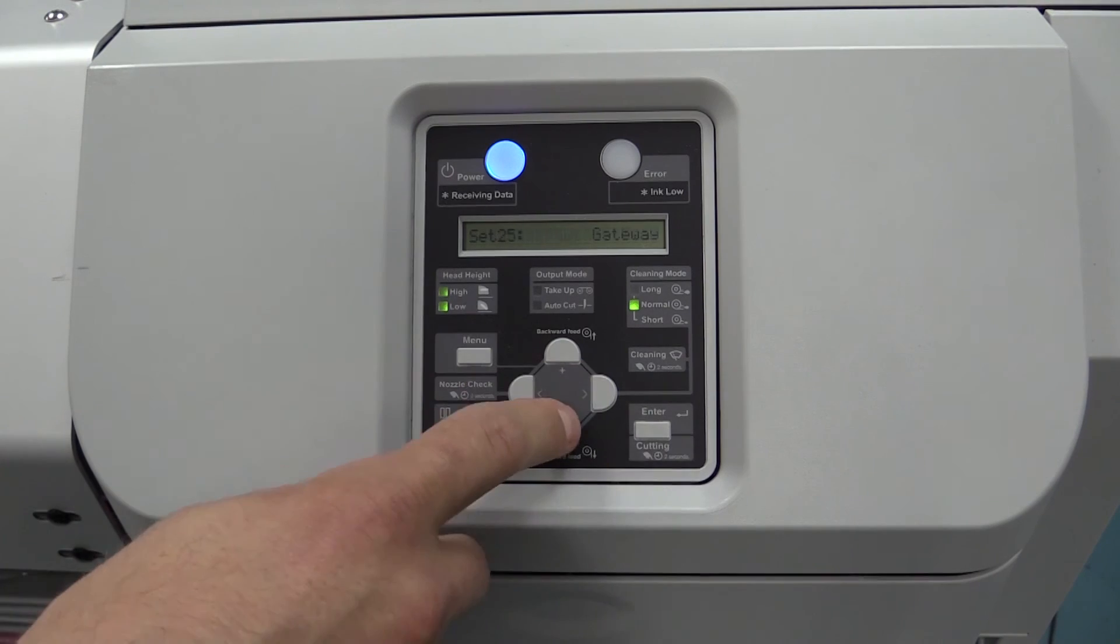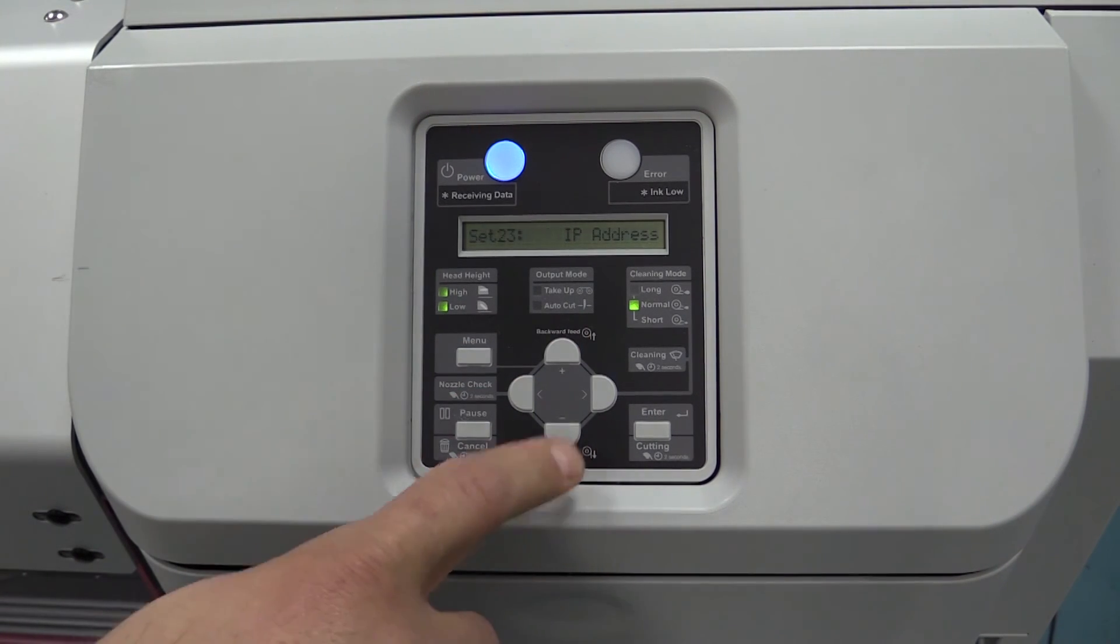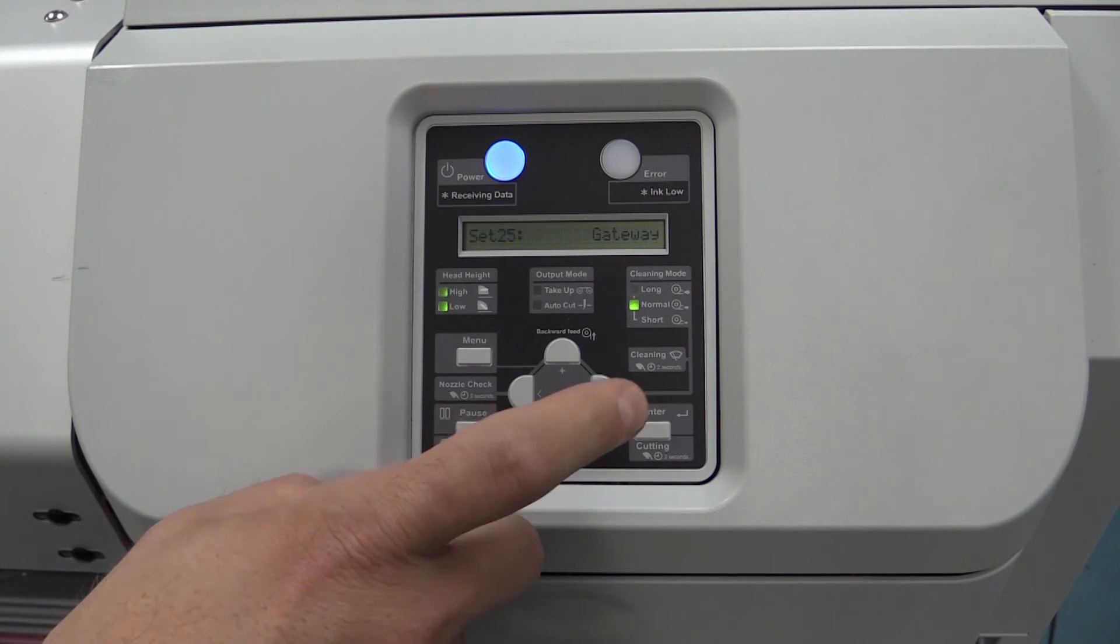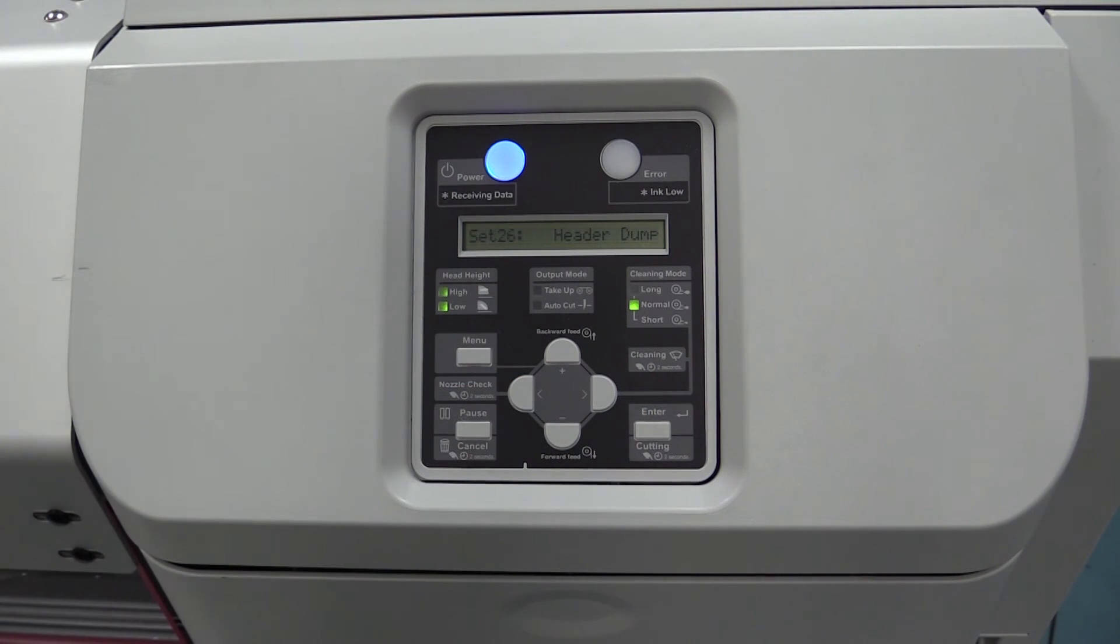Settings 23 through 25 are all of your network connections: your IP address, your subnet, your gateway. These are all set during your initial installation where we get it connected onto your network.